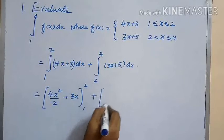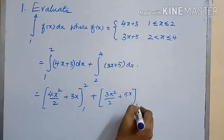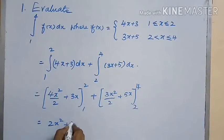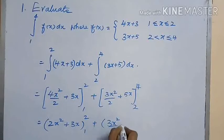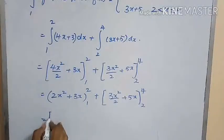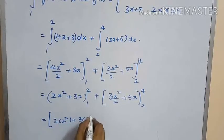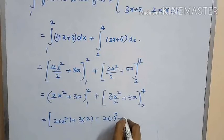Integrating, we get 4x²/2 plus 3x within the limits 1 to 2, and 3x²/2 plus 5x within the limits 2 to 4. After simplification, this becomes 2x² plus 3x within limits 1 to 2, and 3x²/2 plus 5x within limits 2 to 4. Substituting the upper and lower limits, we get 2(2²) + 3(2) − 2(1²) − 3(1).